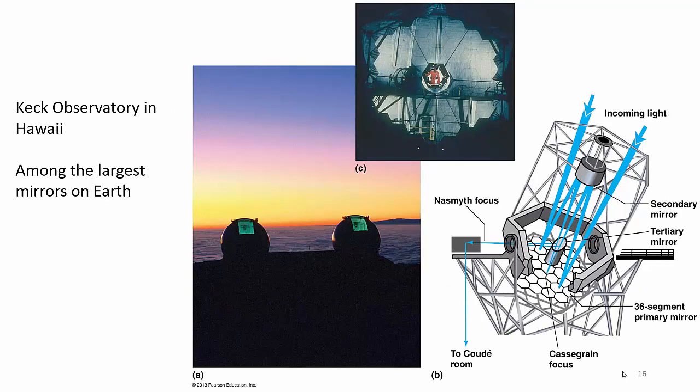This is the Keck Observatory up in Hawaii. It has some of the biggest mirrors on Earth. This is kind of a depiction of what it looks like inside—again, incoming light, bounce off mirror, go to second mirror, bounce off the eyepiece, and into the room or the computer.